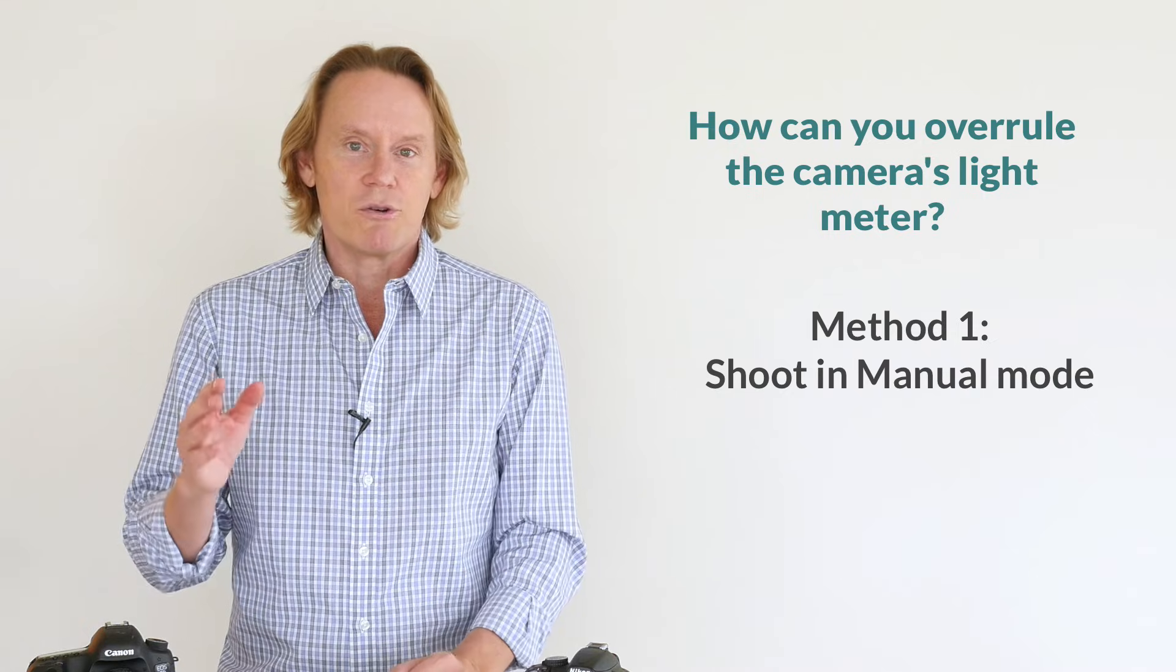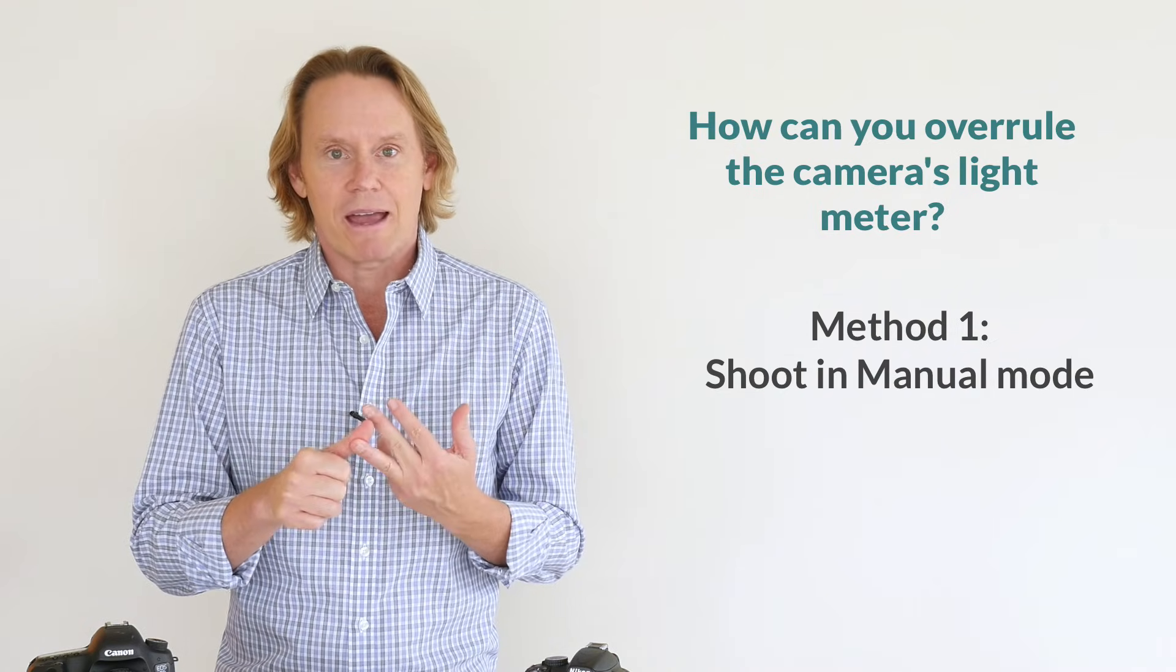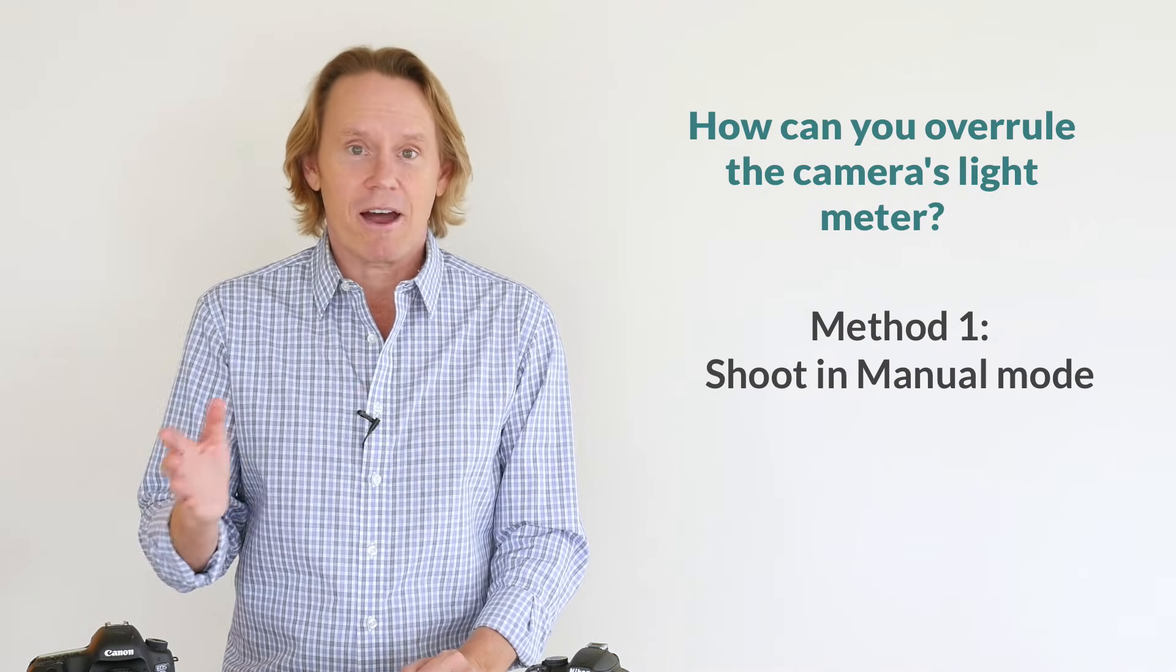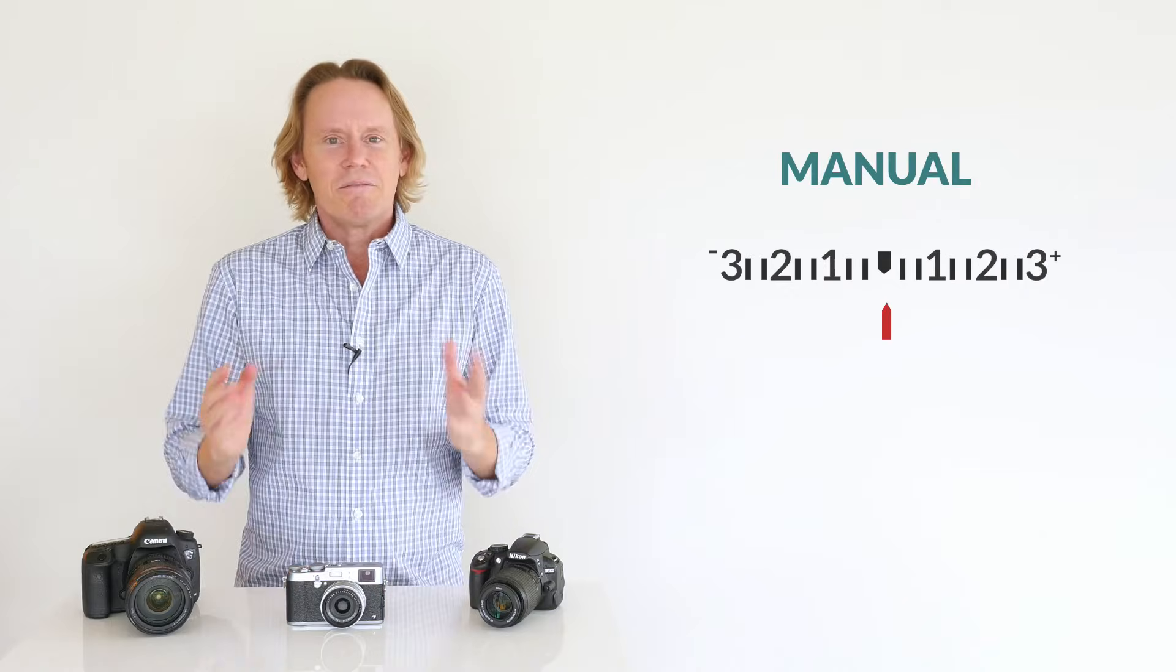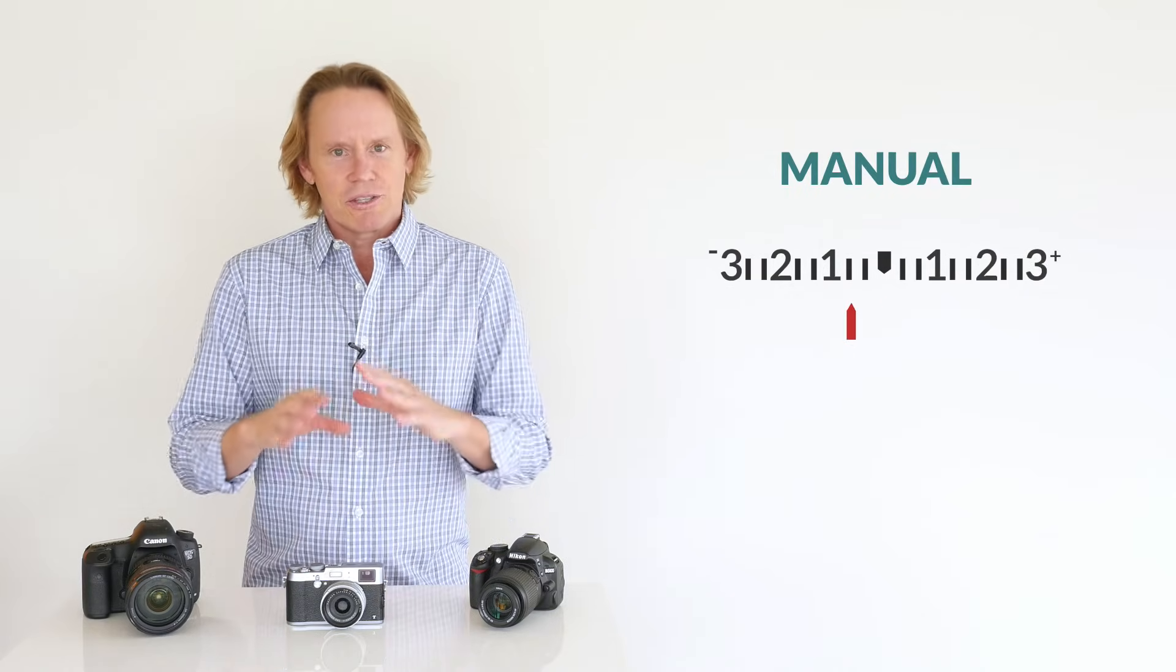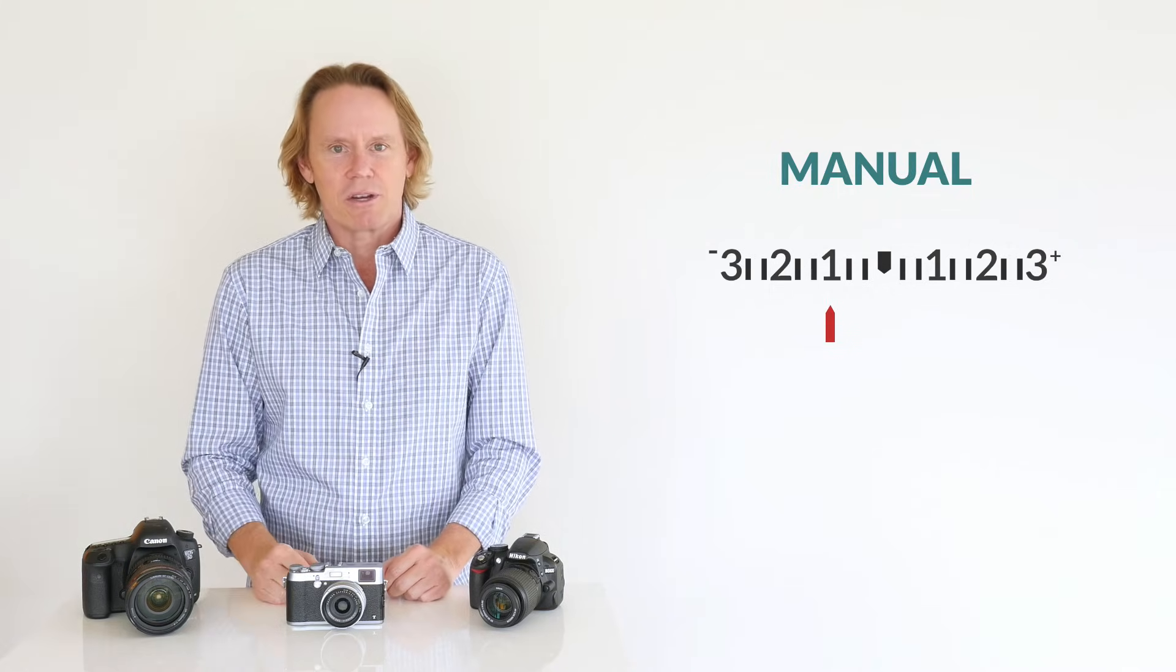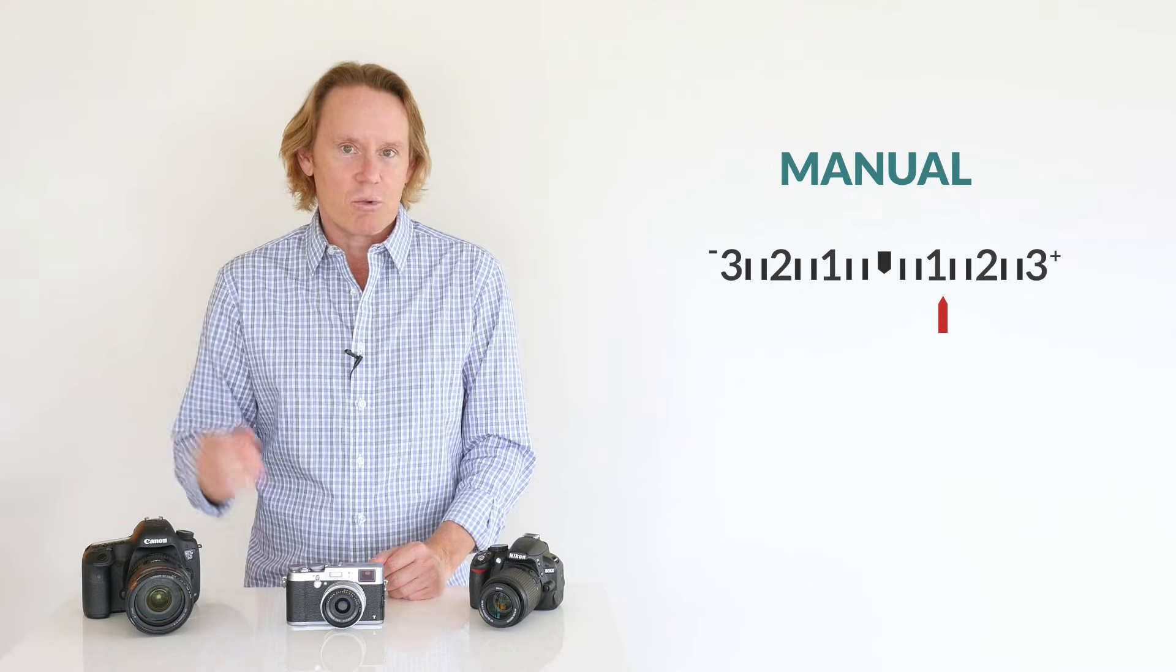Well first, if you're shooting in full manual mode, you control the aperture, the shutter, and the ISO. In that case, the camera's light meter is only giving you advice and you're free to ignore the advice. In manual mode, you don't have to be a slave to the meter's opinion. It's just telling you how the camera sees the world through its middle gray obsession, and you're free to do with that information what you like.